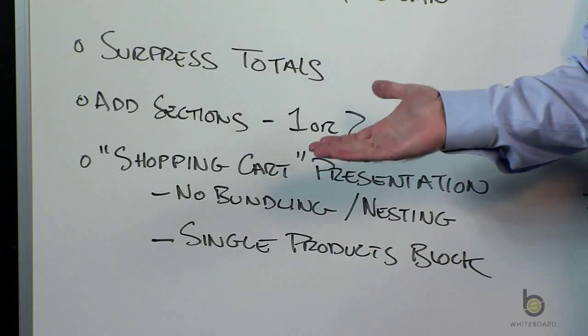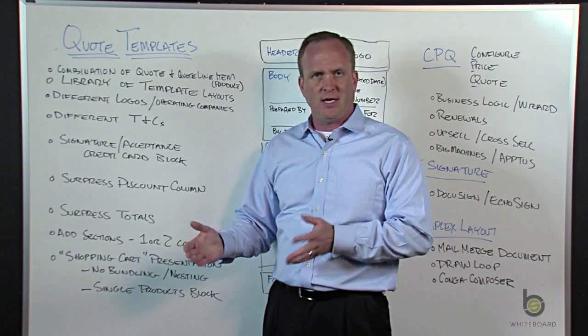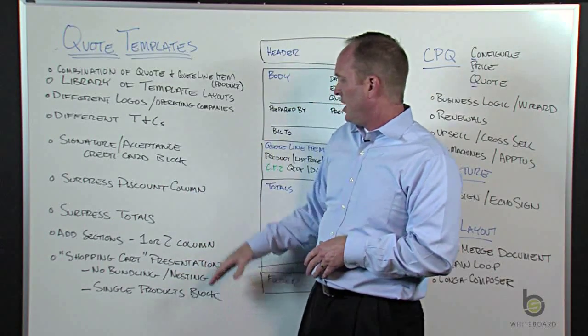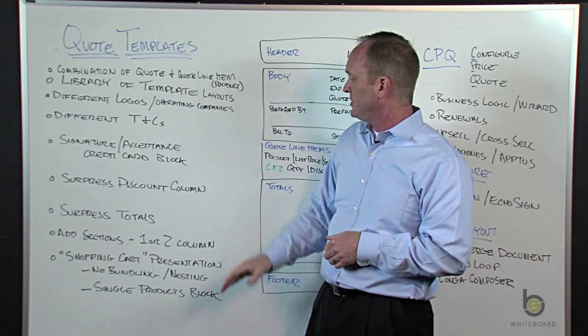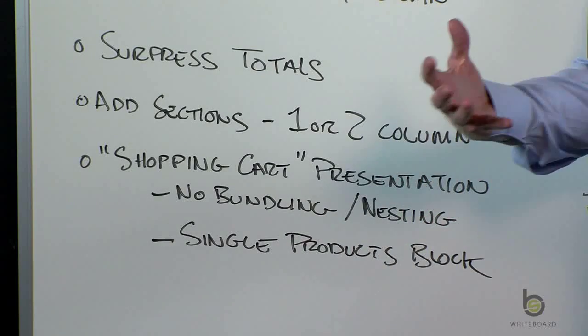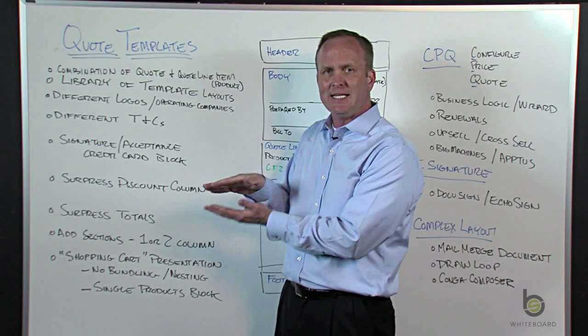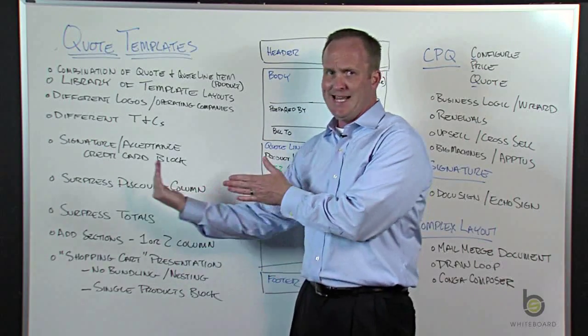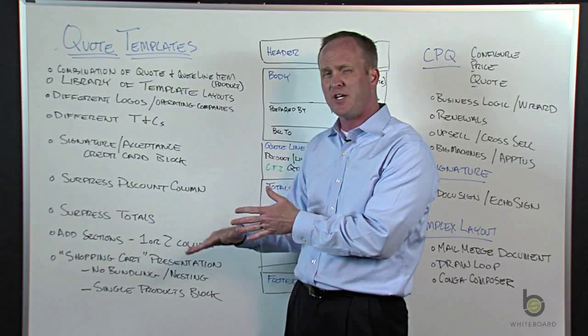Quote templates is basically a page layout editor. You can add custom sections. It can be a one-column or two-column layout. You can add your custom fields, custom fields that are available on your quote or your quote line items. Something you've got to remember about the quote template, it's fairly rigid. It's kind of a shopping cart layout, so it has a listing of all your products. It doesn't do any nesting, bundling, or indent products. You can't do sub-bullets or something like that. So it's fairly generic.